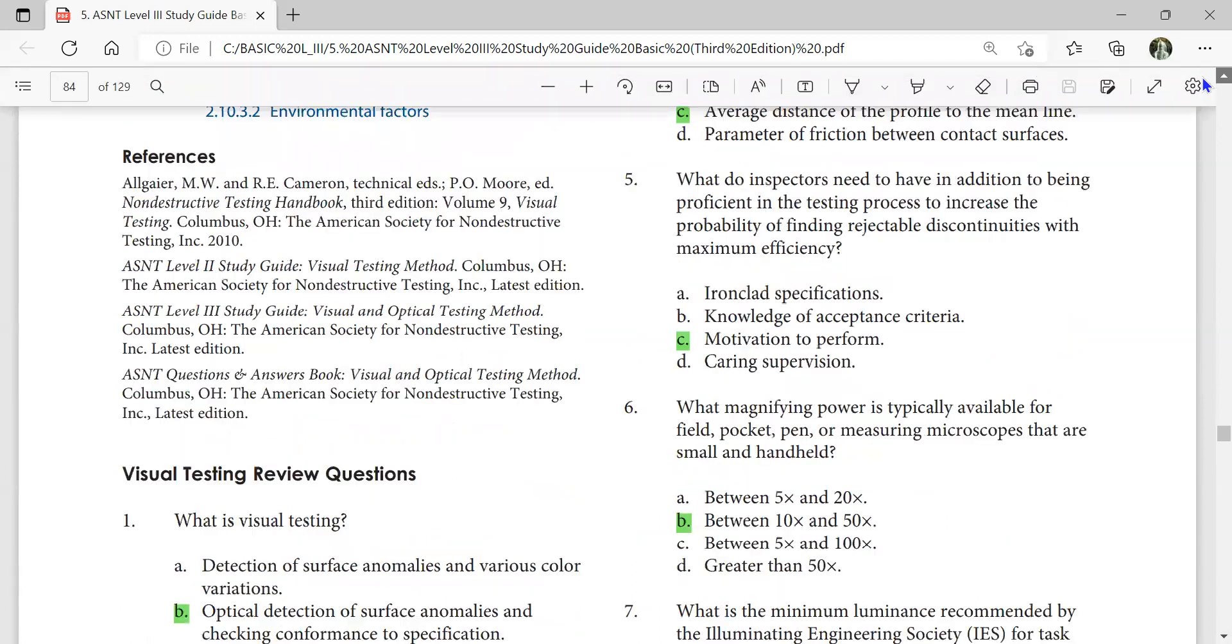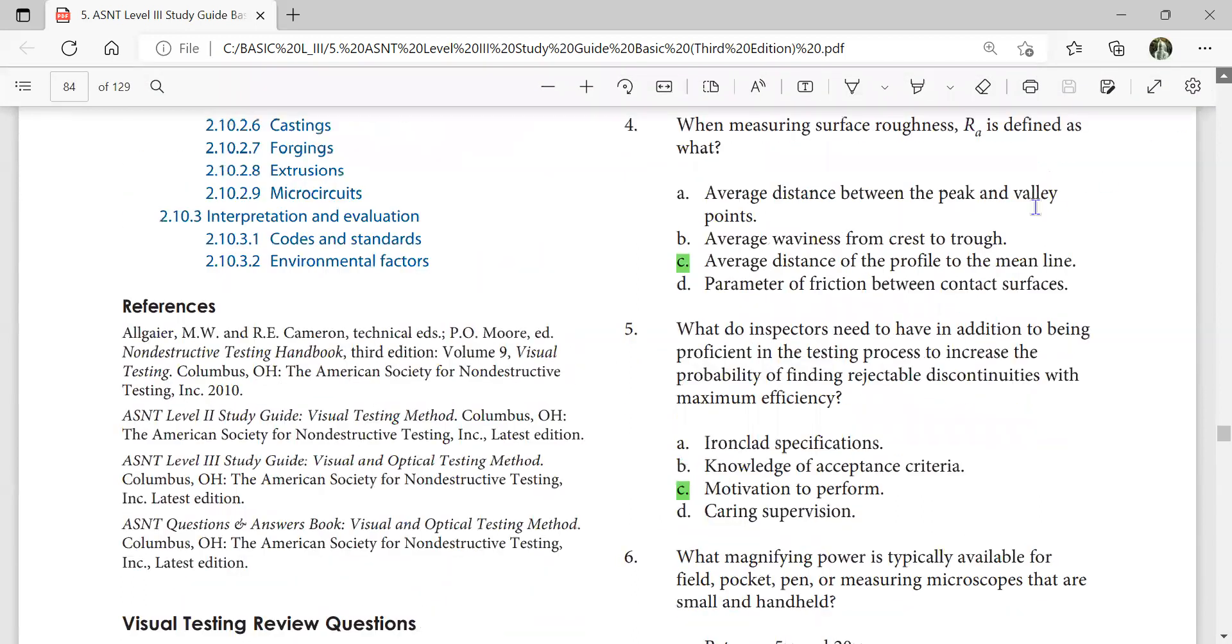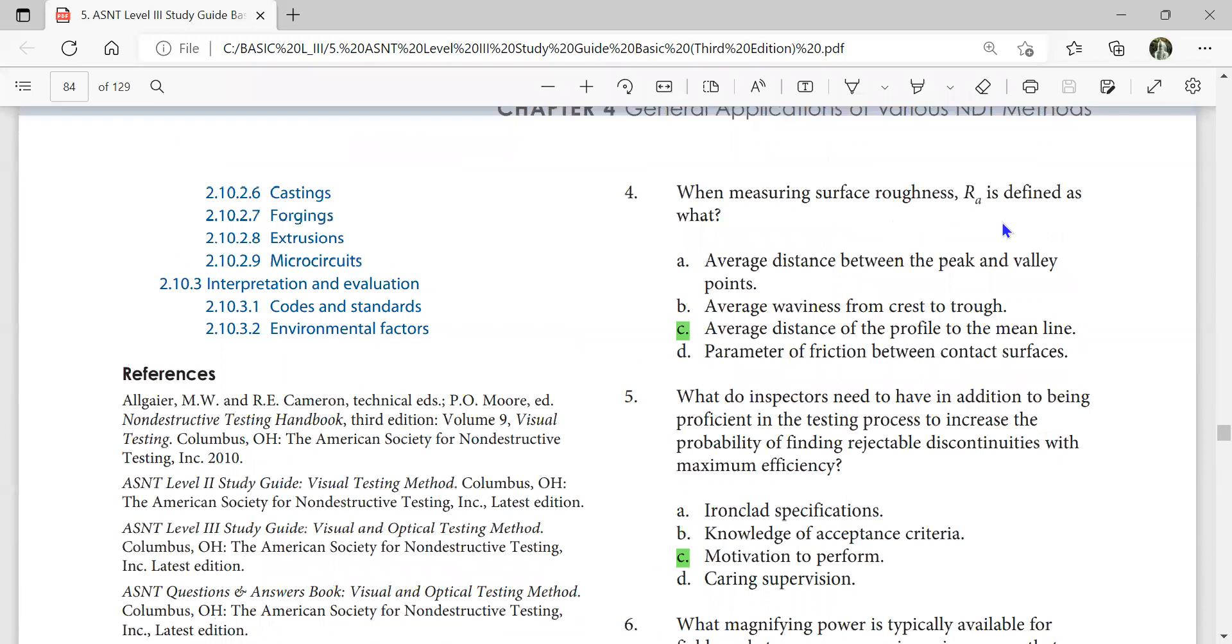Visual testing. We'll start from here directly. When measuring surface roughness, Ri is defined as what? Average distance from the profile to the mean line.